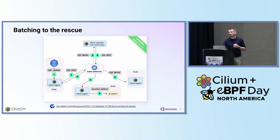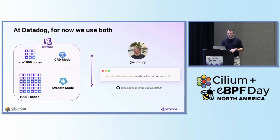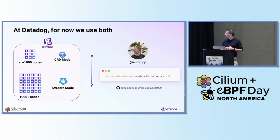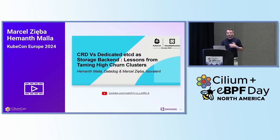Thankfully, there are various ways to reduce this pressure. For example, we can use Cilium endpoint slices since version 1.11, which can greatly reduce the amount of updates required by batching them together. At Datadog, we currently have both solutions. Most of our clusters, which are fairly small — under 1,000 nodes — run under the default CRD-based approach. Our bigger ones have dedicated etcd clusters associated with them. As our node count can evolve over time, we can now easily switch from one to another thanks to contributions from our colleague Anton, which allows writing to both modes in parallel, making the migration path very straightforward.